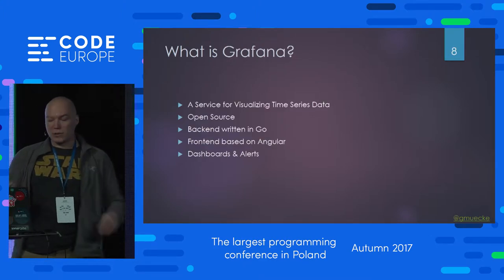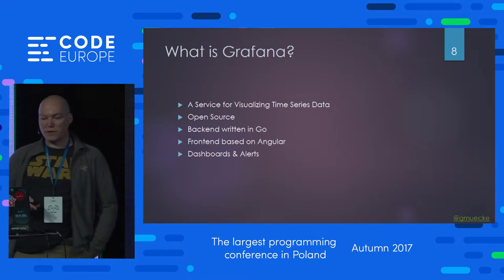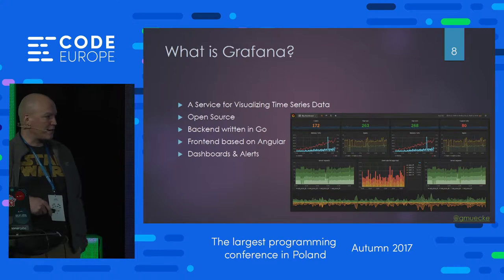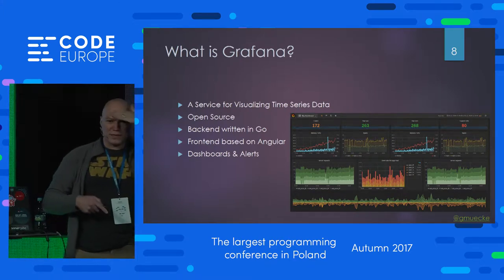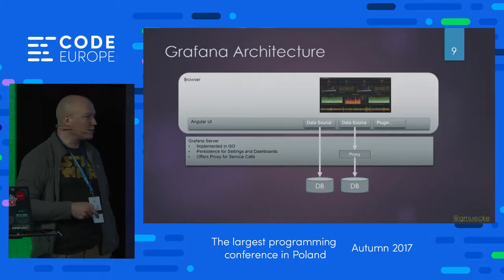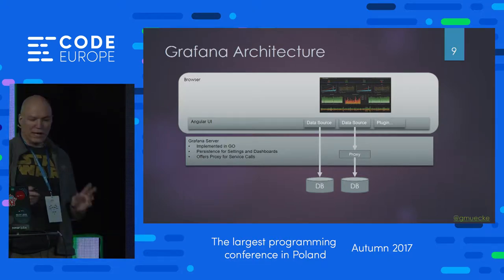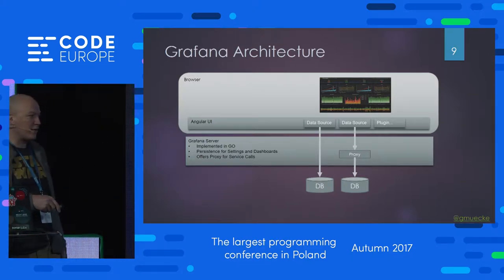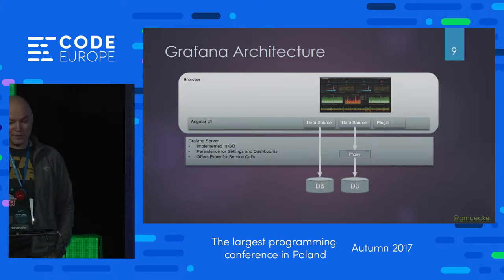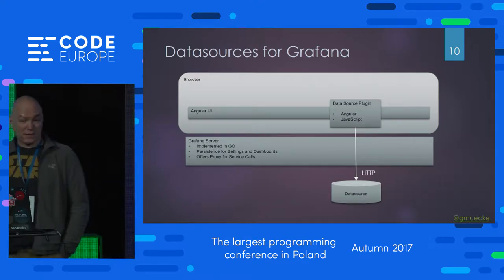For visualizing the data, I didn't want to build something new — I wanted to reuse what was already there. There's a framework called Grafana. It's a service for visualizing time series data: open source, back-end written in Go, front-end based on Angular, and you can create nice dashboards. Grafana has the possibility to write your own data source plugins, but they are all plugins for the Angular UI — they're not run on the back-end. The back-end only stores settings and provides a proxy. With Angular data sources, the only way to access data in the back-end is via HTTP.